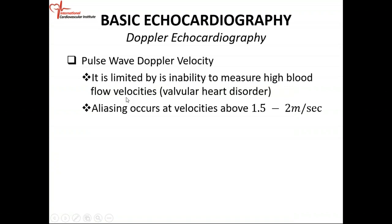Pulse wave Doppler is limited by its inability to measure high blood flow velocity. Pulse wave Doppler cannot measure high blood flow velocity — it is limited to about 1.5 to 2 meters per second. Anything above that, pulse wave Doppler cannot measure. If you have high velocities and try to use pulse wave Doppler, you get something called aliasing. What will happen is, say you're measuring a velocity of 4 meters per second — once you get to your 1.5 to 2 meters per second limit, it's going to cut off and put the rest below.